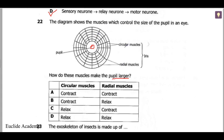Looking at the radial and circular muscles: the pupil becomes larger when the circular muscles relax, and the radial muscles contract — pulling outward to make the opening bigger. When the pupil needs to get smaller, the radial muscles relax and the circular muscles contract to make the pupil smaller.